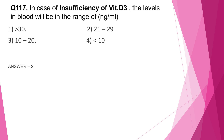Question number 117: In case of insufficiency of Vitamin D3, the levels in blood will be in the range of — more than 30, 21 to 29, 10 to 20, or less than 10? The correct answer is option 2, 21 to 29 nanogram per ml. Vitamin D3 insufficiency is below 30, that is between 21 to 29 ng/mL, while below 20 nanogram per ml is considered Vitamin D3 deficiency.